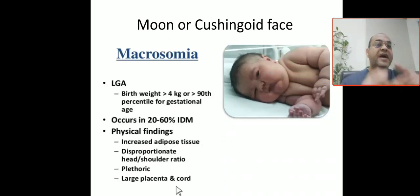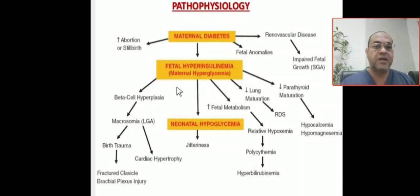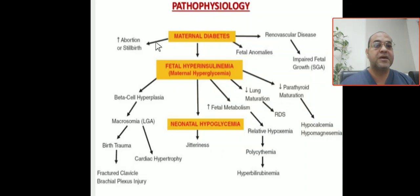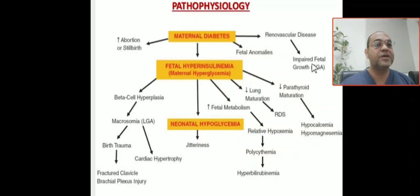Large placenta is also seen, and IDM is one of the differential diagnoses of large placenta. The differential diagnosis of large placenta includes hydropic placenta, nephrotic placenta, and diabetic placenta. Maternal diabetes leads to fetal hyperinsulinemia; maternal hypoglycemia leads to neonatal hypoglycemia and jaundice. Maternal diabetes also leads to increased abortion and stillbirth. If pregnancy continues, the baby may be premature or may have fetal abnormalities. Long-term uncontrolled diabetes leads to renal and vascular disease, which can impair fetal growth and result in a small for gestational age baby.